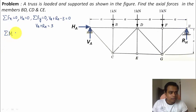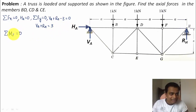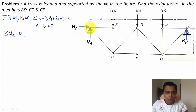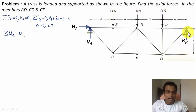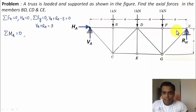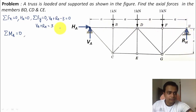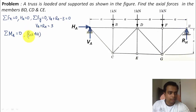Now applying the third equation — summation of moments about point A equals zero. Since HA and VA both pass through point A, their moments are zero. We are left with four forces: the three 1 kN loads and RH. RH produces an anti-clockwise moment at A, with a perpendicular distance of 4a.